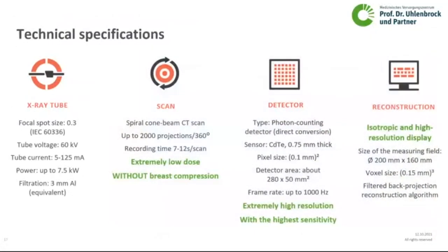What are the technical specifications? You have a high-power x-ray tube and a spiral cone-beam CT scan. But the main thing is the detector — it is the first clinical application of a photon counting detector in a CT scanner. The detector uses direct conversion, combining extremely high resolution of 0.1 mm with an extremely high frame rate of 1000 Hz, meaning extremely high resolution with the highest sensitivity. Then the reconstruction algorithm is applied.